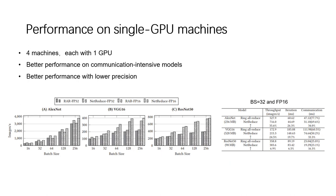For performance on single-GPU machines — four machines each with one GPU — we vary different deep learning models, batch sizes, and precision levels. We conclude that NetReduce has better performance for communication-intensive models such as AlexNet and VGG, because the benefits from reducing network traffic can be hidden behind the cost of computing for compute-intensive models such as ResNet.